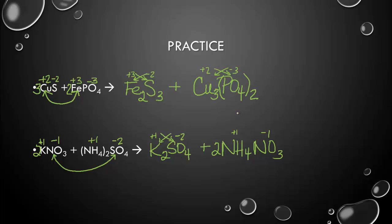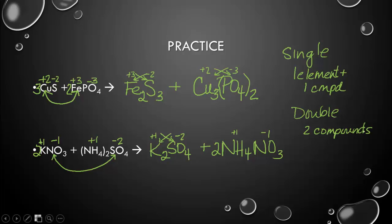So how do you tell the difference then whether you have a single replacement or a double replacement? In a single replacement, you're going to have one element and one compound on both sides of your arrow. In a double replacement, you have two compounds on both sides of the arrow. So there's a difference between the two. So now, if we go all the way back: synthesis, you're going to have one product. Decomposition, one reactant. Single replacement, one element and one compound. Double, two compounds on both sides of the equation.